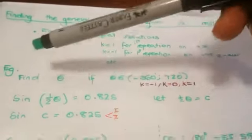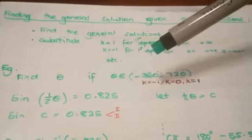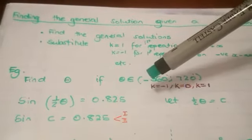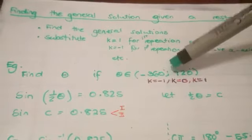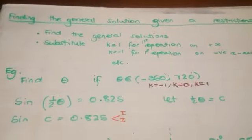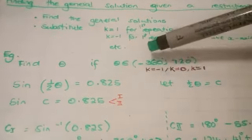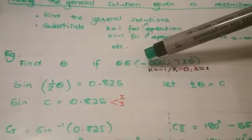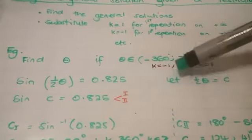So we are going to do an example. It says find theta if theta lies between negative 360 and 720. As you can see here, if you go back to the diagram we did last week, negative 360 falls under the first repetition on the left-hand side.